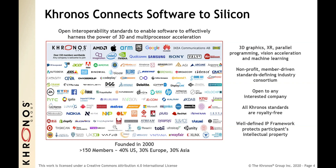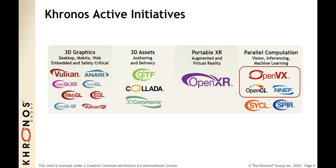We've been creating standards for 20 years now and have almost 160 members, including everyone from the largest companies down to small startups. Any company who wishes to join Khronos is welcome to participate, to have a voice and a vote in how Khronos standards evolve. Here are some of the most active standards currently being developed by Khronos. There are four main groupings: 3D acceleration APIs including Vulkan, OpenGL, and WebGL.